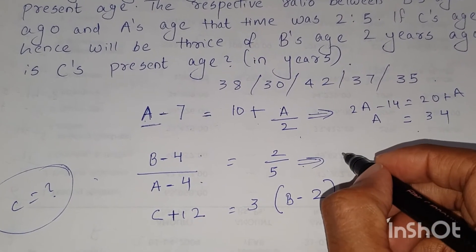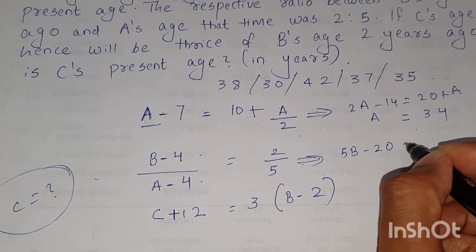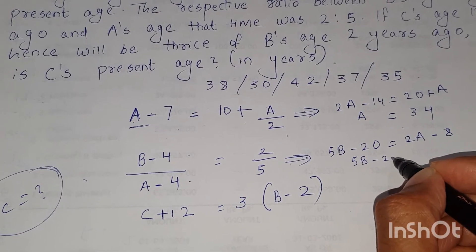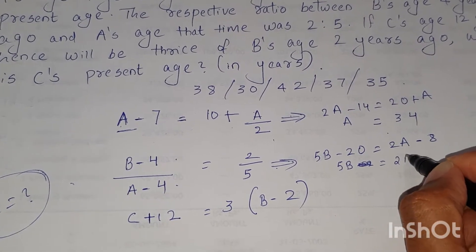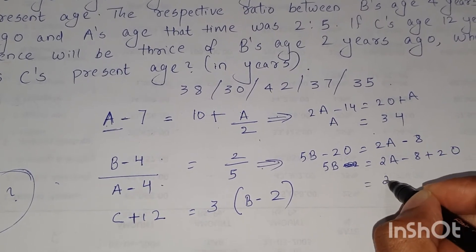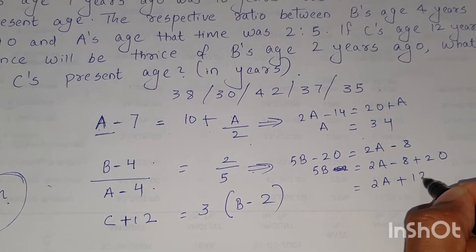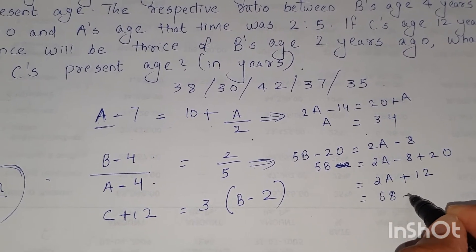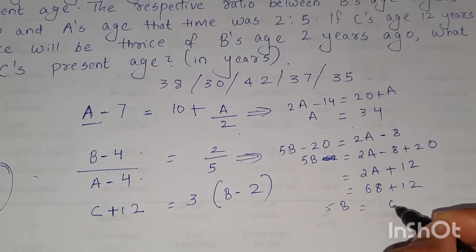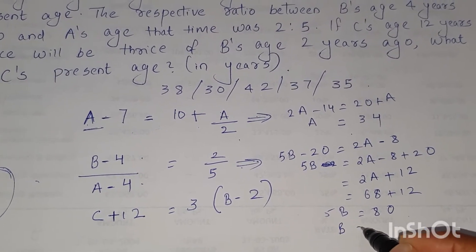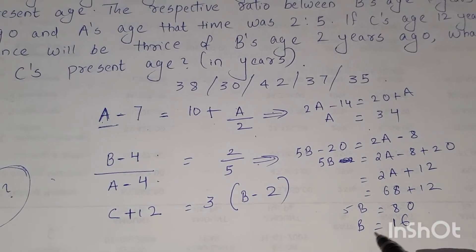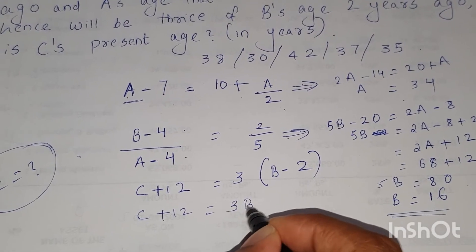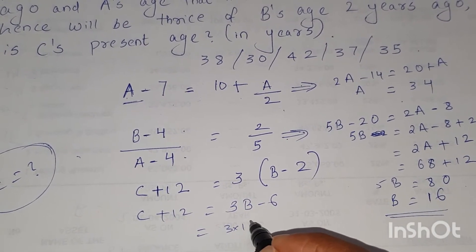Now from the second equation, 5B minus 20 is equal to 2A minus 8. So 5B is equal to 2A minus 8 plus 20, that is 2A plus 12. And we know the value of A, that is 34. So 34 into 2 is 68 plus 12. So 5B is equal to 80, then B is equal to 16. And if B is equal to 16, C plus 12 is equal to 3B minus 6. We know the value of B, that is 3 into 16 minus 6.